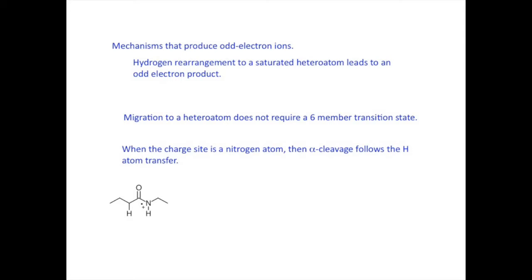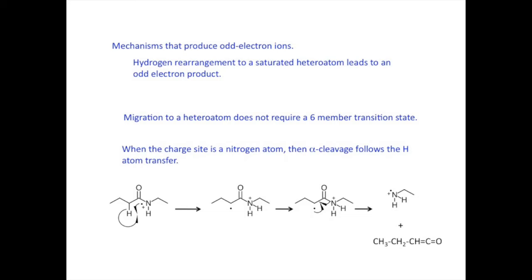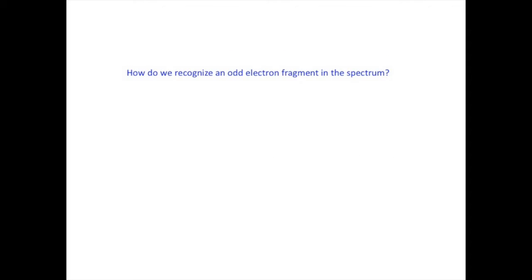Let's look at an amide, for example. Here ionization takes place at the nitrogen atom in this simple amide. Hydrogen transfer to the nitrogen moves the free radical to the other side of the carbonyl. The free radical initiates a new bond with the carbonyl carbon, which must let go of the nitrogen atom to complete the process. As a result, we observe an odd electron ion containing nitrogen in our spectrum. So we see that an odd electron ion can explain the loss of neutral molecules and have important implications with regard to the structure of the sample molecule.